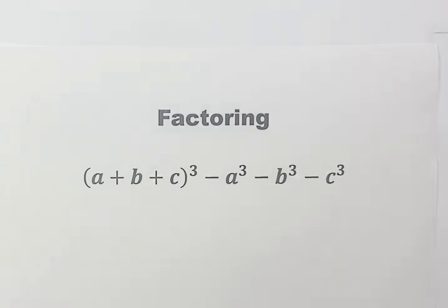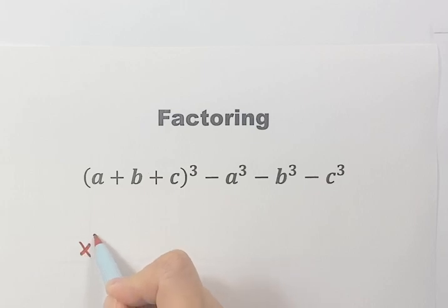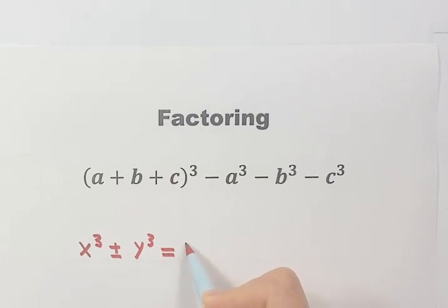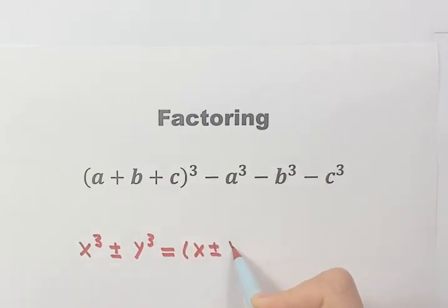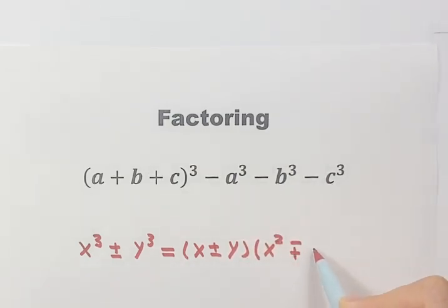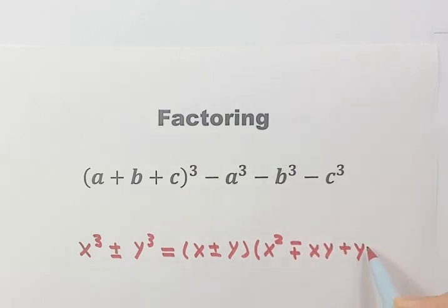First, let's write down the formula we're going to use. That's x to the third plus or minus y to the third, equals x plus or minus y, then x squared minus or plus xy, then plus y squared.